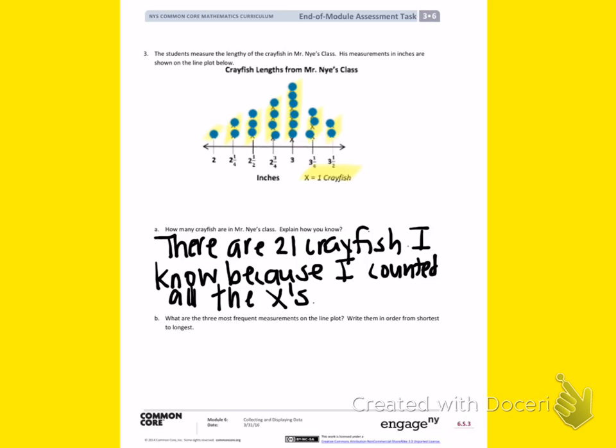Letter B. What are the three most frequent measurements on the line plot? Write them in order from shortest to longest. So I'm going to look back up on my line plot and I want to find the three measurements, the three numbers on the bottom, that have the most X's.